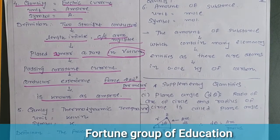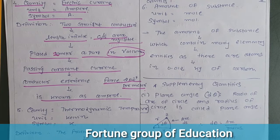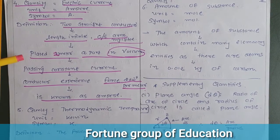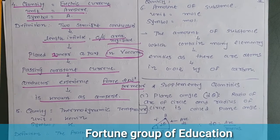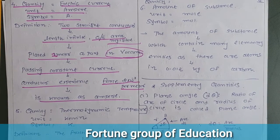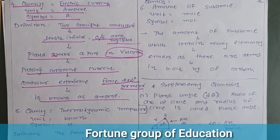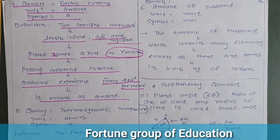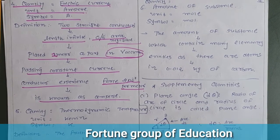To summarize the definition of ampere: two straight conductors of infinite length and negligible cross-section are placed in a vacuum one meter apart. Passing the same amount of current through both conductors, if the force per meter between them is 2×10⁻⁷ N/m, that current is defined as one ampere.